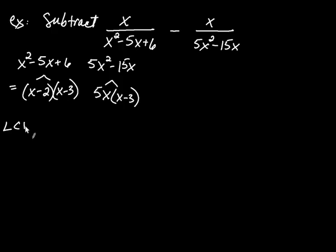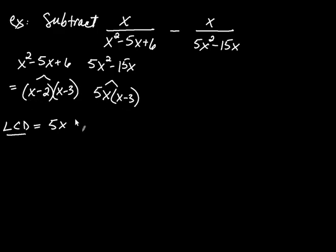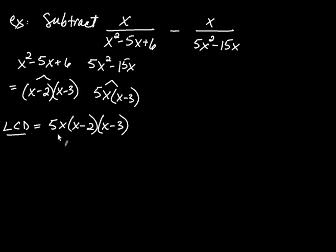To find the LCD, start with the numbers. Looking at these: one 5 versus no 5s — put one 5 in. There's a factor of x: one factor of x versus none — put in one x. Then factors of x minus 2: one versus none — put in one. Then x minus 3: one versus one — put in one x minus 3. Now you can see why I said finding the LCD is crucial. There's a whole other video if you'd like review on that process.